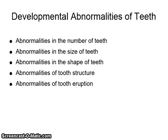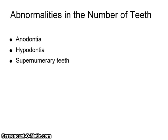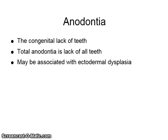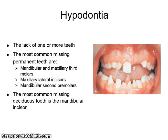Developmental abnormalities of teeth can include abnormalities in the number, size, shape, structure, or eruption of teeth. Abnormalities in the number of teeth include anodontia, hypodontia, and supernumerary teeth. Anodontia is the complete congenital lack of teeth; total anodontia is the lack of all teeth and may be associated with ectodermal dysplasia. Hypodontia is the lack of one or more teeth. The most common missing permanent teeth are mandibular and maxillary third molars, maxillary lateral incisors, and mandibular second premolars.